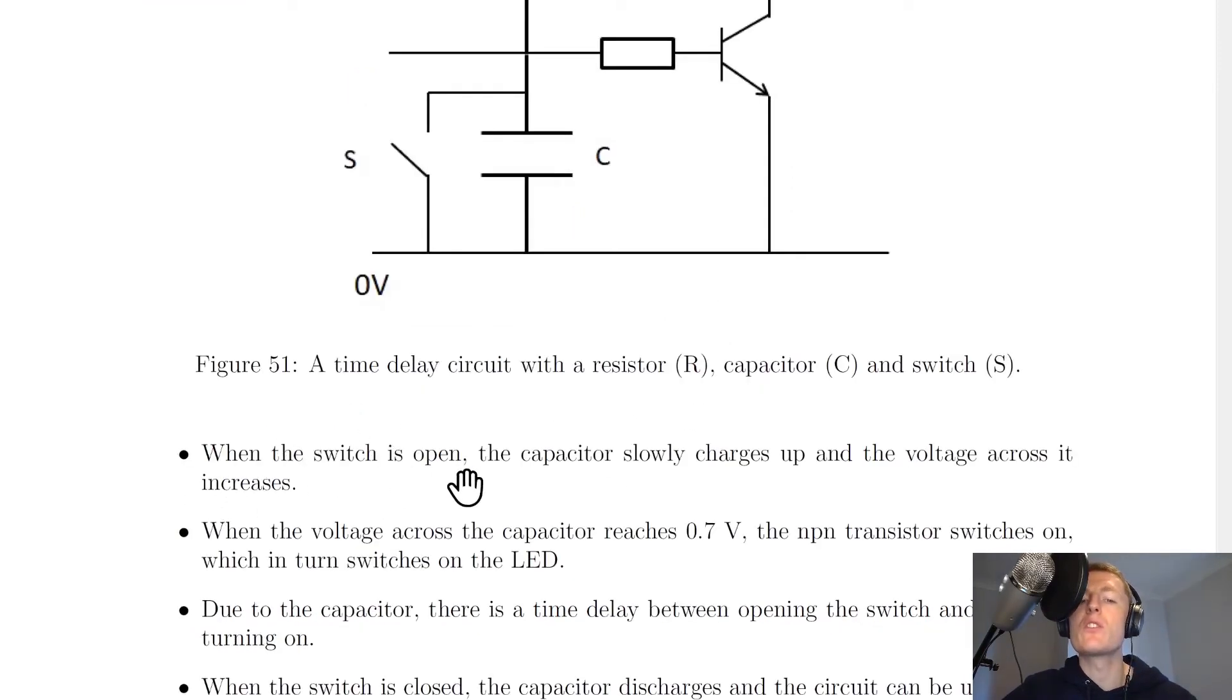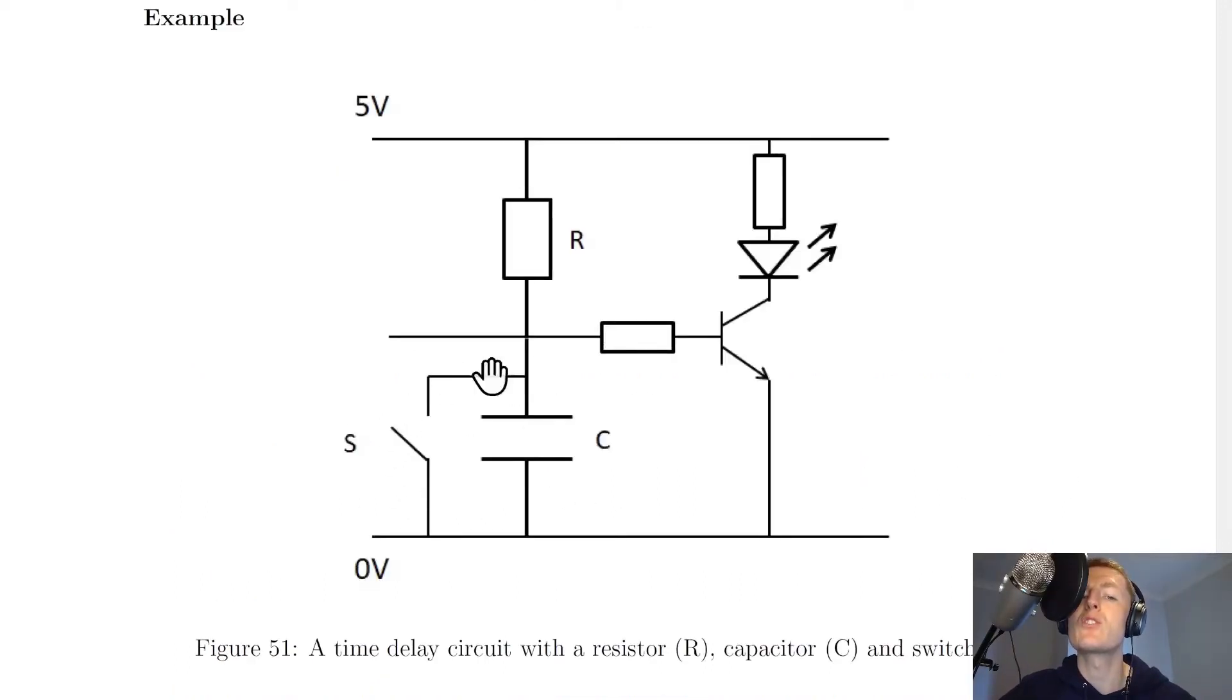So it says here that when the switch is open, the capacitor slowly charges up and the voltage across it increases. So when the switch is open there, it's almost like it's not there at all, and the voltage across the lower component is going to increase.